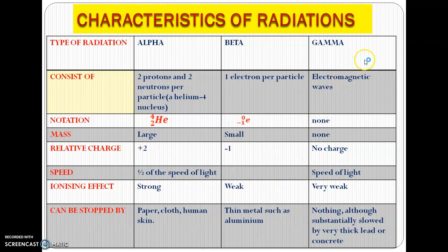Gamma rays are normally electromagnetic waves. They have no mass and they have no relative charge. They move at the speed of light and they have a very weak ionizing effect. There's nothing that can stop them except for very thick lead, which actually slows them down.